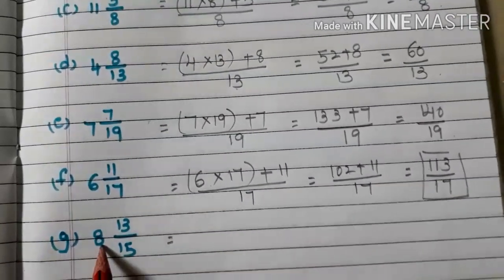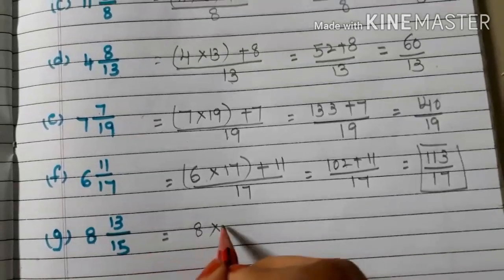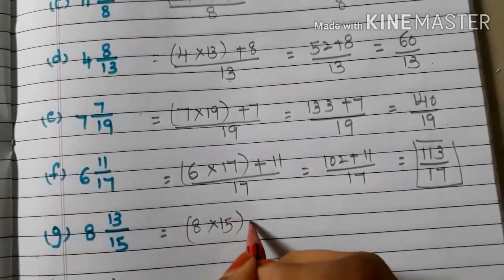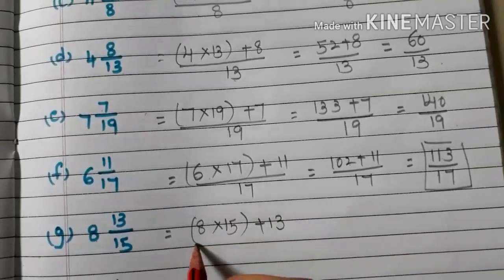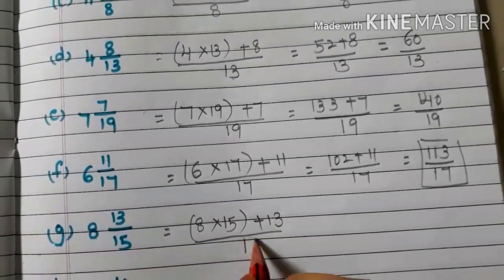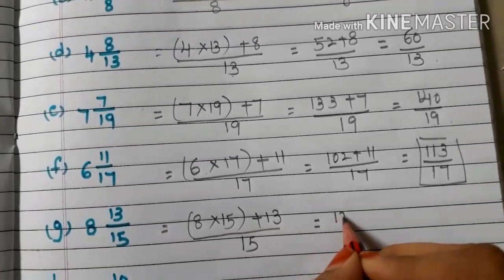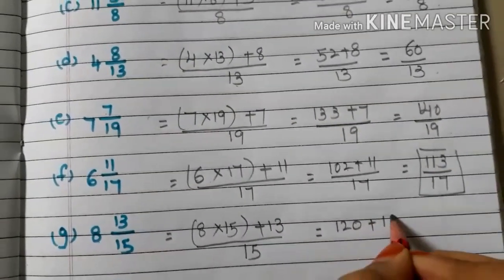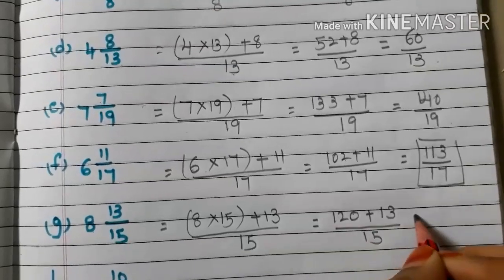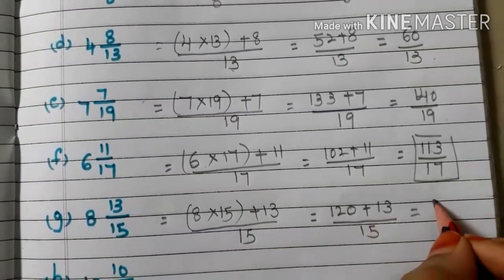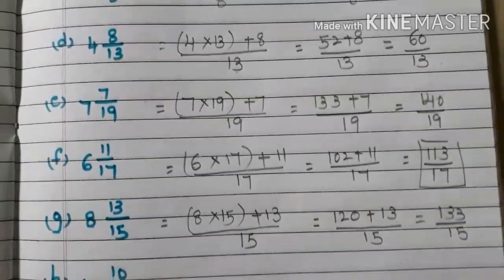G: 8 and 13/15. Whole number into denominator plus numerator 13, by 15. 8 fifteens are 120, plus 13, by 15. 120 plus 13 is 133/15.